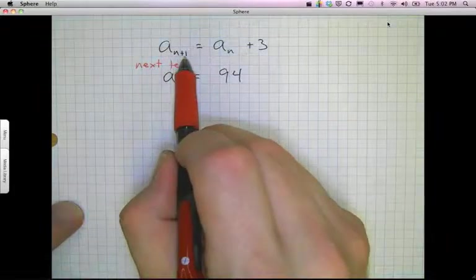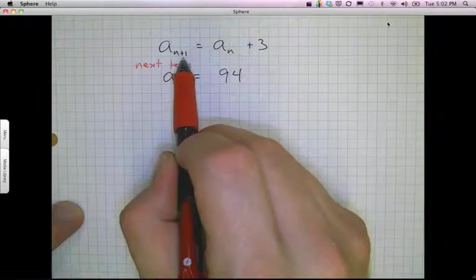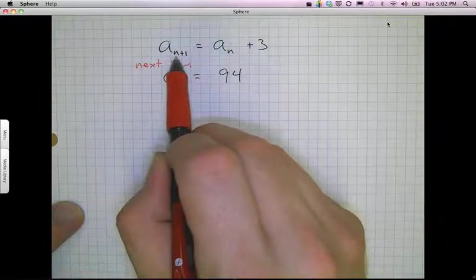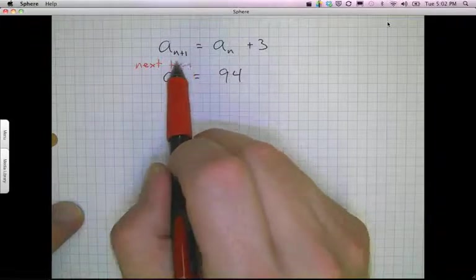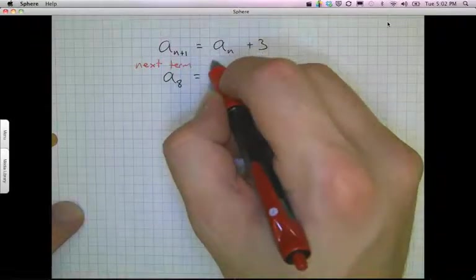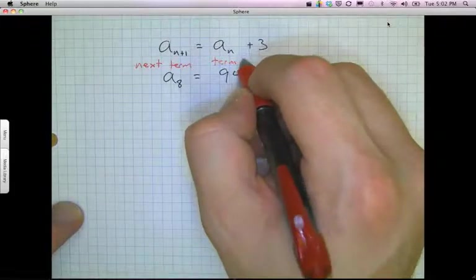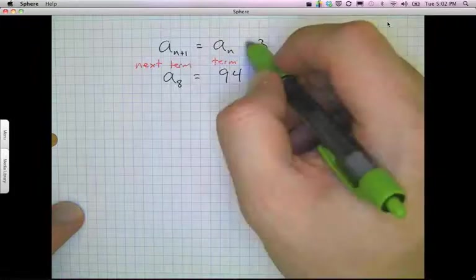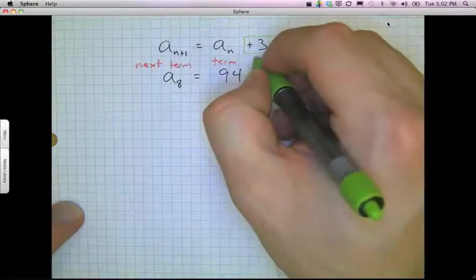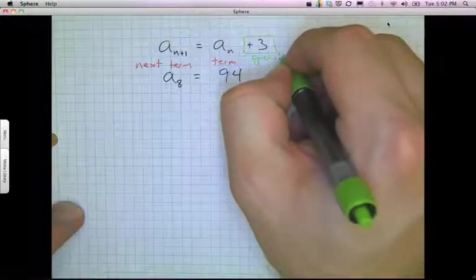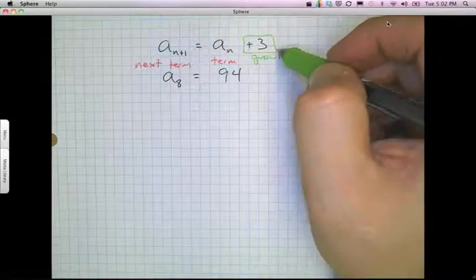So a to the n plus 1 just means the next term. n plus 1 means basically one more. And n, since that's the term number that I have, adding 1 to that will give me the next one. So a sub n is the term you have. And the plus 3 right here represents the growth in this situation. In this case, I'm adding 3.